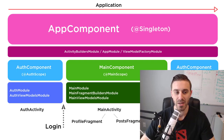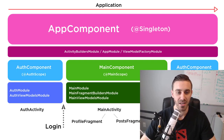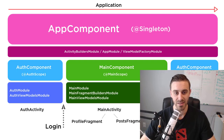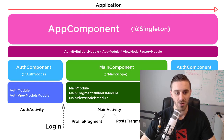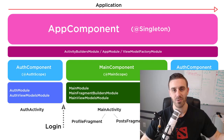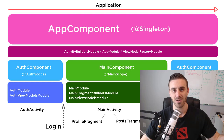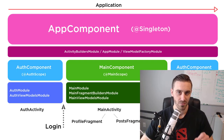So that's scoping in a nutshell at a high level. In this video, I'm going to start talking about the singleton annotation, which is probably the most common scope that people know about. It's used for scoping something to exist as long as the application does — so as long as the application exists, that object will exist.